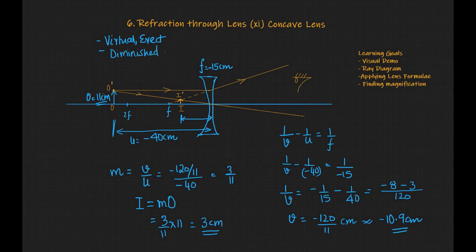Now as this object goes farther and farther away, this image will come closer and closer to the focal length and as the object goes very far away or infinity, this image will be very close to the focal length.